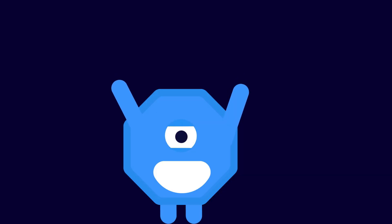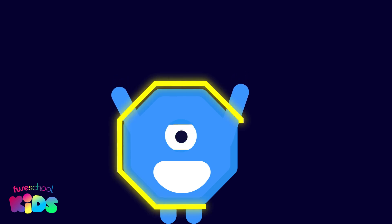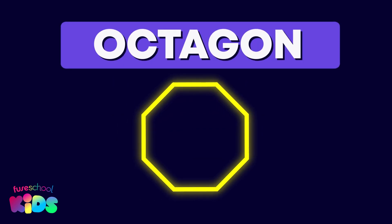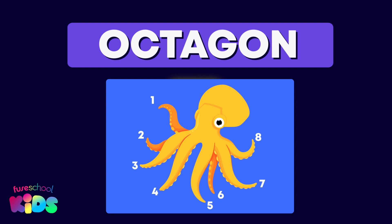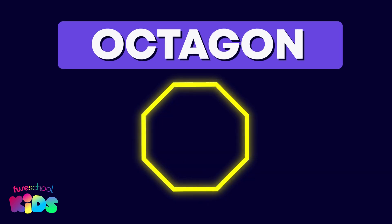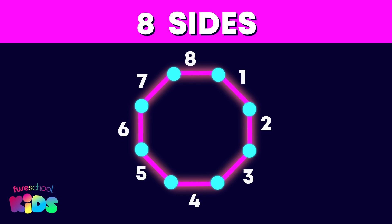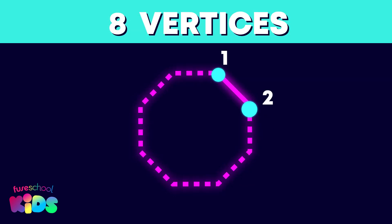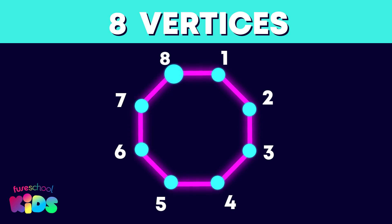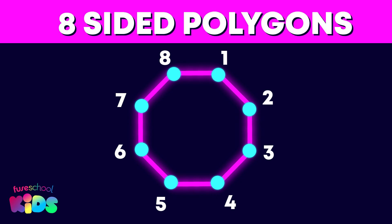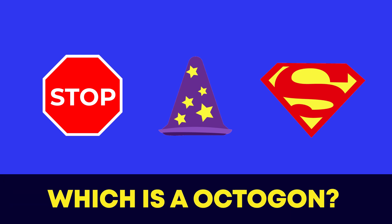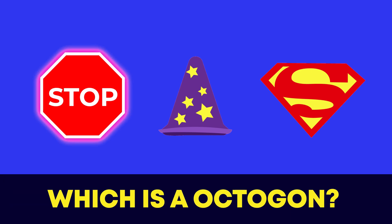This is octagon Oller. Can you say octagon? Just like an octopus has 8 legs, octagons have 1, 2, 3, 4, 5, 6, 7, 8 sides and 1, 2, 3, 4, 5, 6, 7, 8 vertices. Octagons are 8-sided polygons. Can you find the octagon? Here it is. Well done everyone.